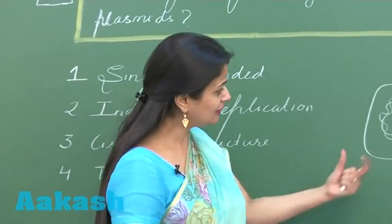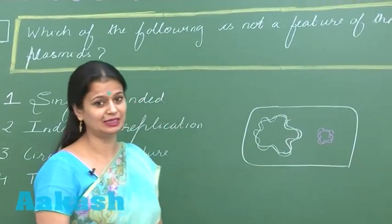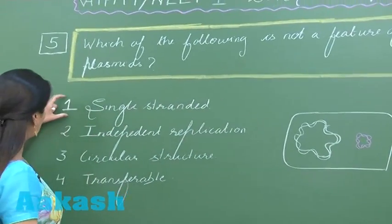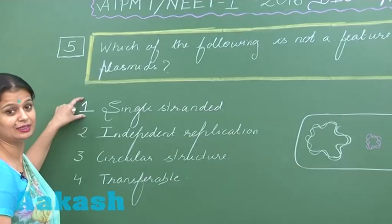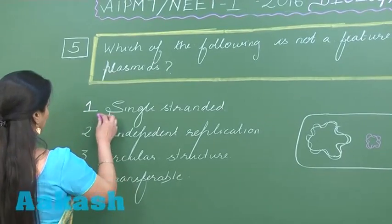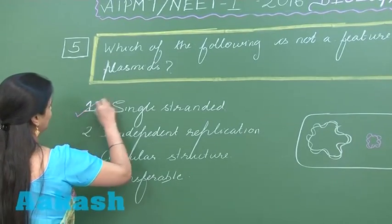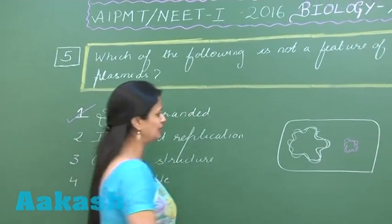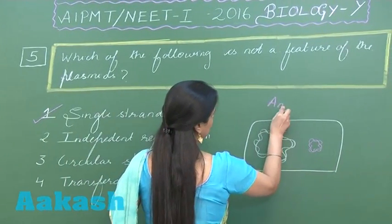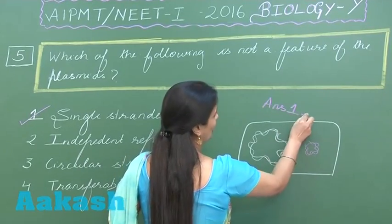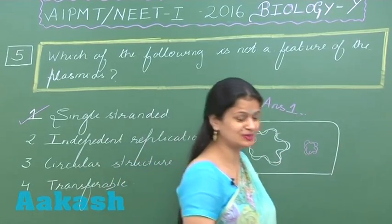First option: single-stranded - wrong! They have double-stranded DNA. So for question number 5, the right answer is option number 1. Now let's discuss question number 6.